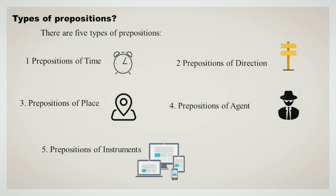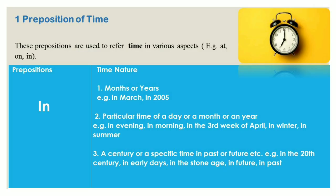Considering various situations, prepositions are divided into five types: prepositions of time, prepositions of direction, prepositions of place, prepositions of agent, and prepositions of instruments. Let's see first the prepositions of time.